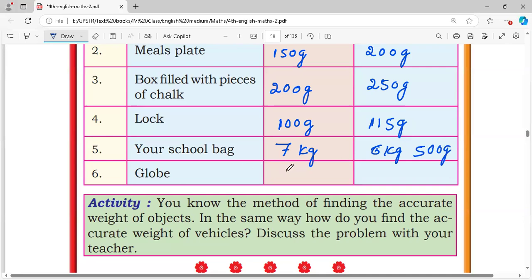Globe. Globe. 500 grams. 750 grams. Accurate weight is 750 grams.